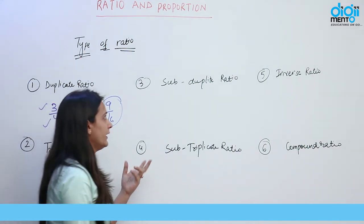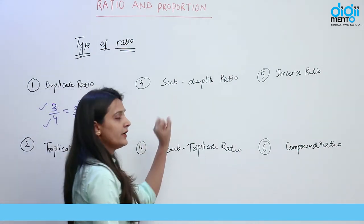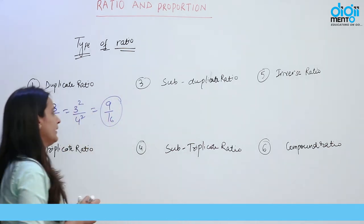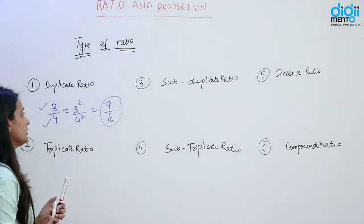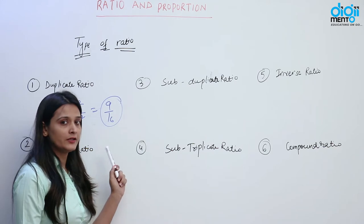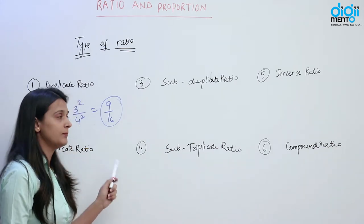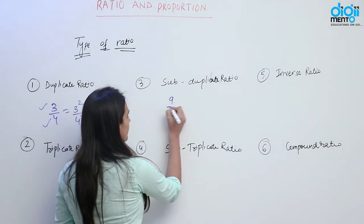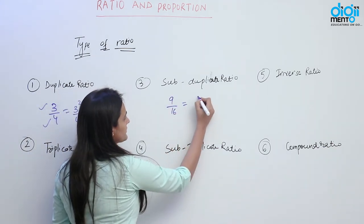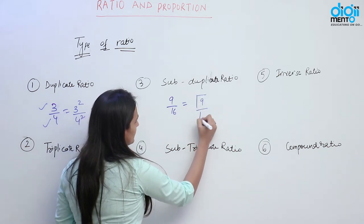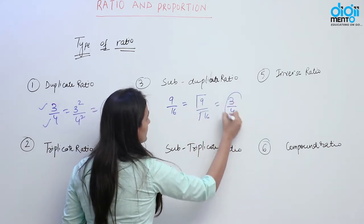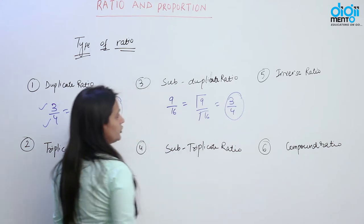Agar ab hamse ye poocha jaye, subduplicate ratio kya hai? What is subduplicate ratio? The ratio of the square root of the numbers is known as subduplicate ratio. Suppose if we have the number 9 by 16, the square root of these numbers is known as subduplicate ratio.